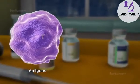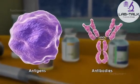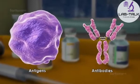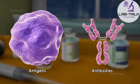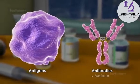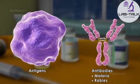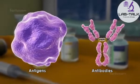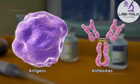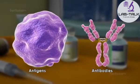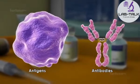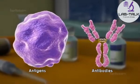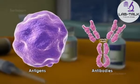Sometimes antibodies are administered directly to fight infections or prevent diseases such as malaria and rabies. The administration of antibodies is referred to as passive artificial immunity. Like passive immunity, it only lasts for a short time.